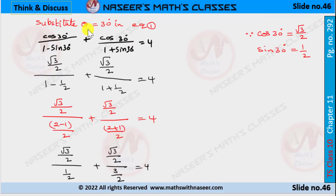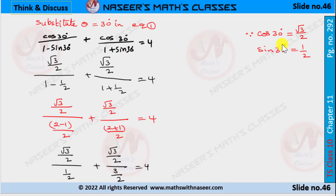Now substitute θ = 30° in equation 1. It can be written as cos 30° / (1 − sin 30°) + cos 30° / (1 + sin 30°) = 4. We already know that cos 30° = √3/2 and sin 30° = 1/2. Now we substitute these values.